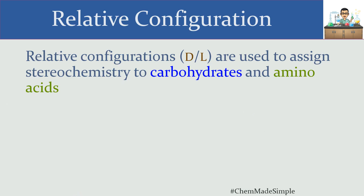Welcome back to ChemOG. Today we're going to take a look at a subset of stereochemistry known as relative configuration. In relative configurations, we're going to look at spatially where substituents are with respect to a certain category of biomolecules — carbohydrates and amino acids.